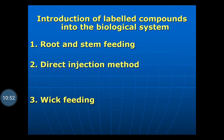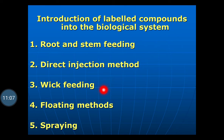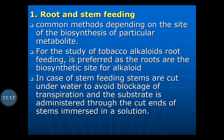Regarding the introduction of labeled compounds: the labeled compounds can be introduced into the biological system by five different methods. First is the root and stem feeding method; second is the direct injection method; third is the wick feeding method; fourth is the floating method; and fifth is the spraying method. We will start with the root and stem feeding method.